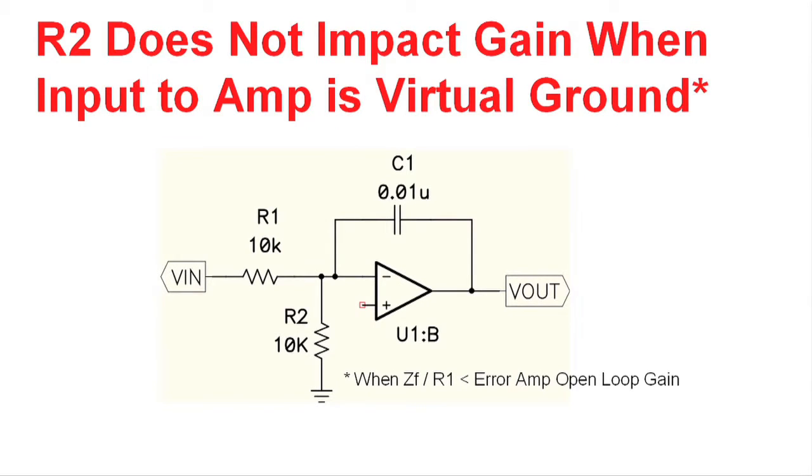In this schematic, we're depicting the error amplifier within the power supply and the compensation components around it. R1 and R2 form a voltage divider that are used to set the output of the power supply. The voltage that's out of that voltage divider gets compared to a reference that will be connected to the positive input of the error amplifier. And between the two of them, they'll generate the error signal.